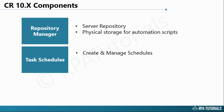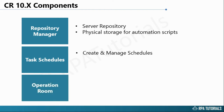Operation Room shows a list of historical and in-progress automations with their status. It can be used to monitor, in real-time, all running automations that have been deployed on different client machines.